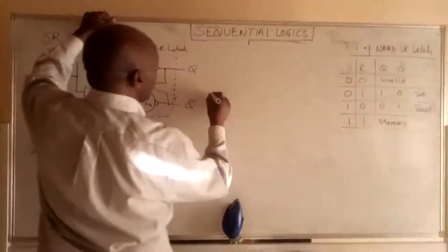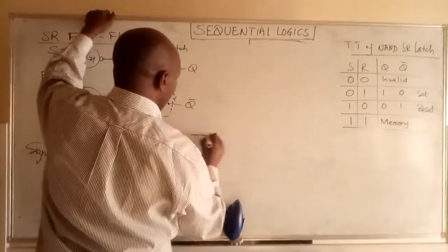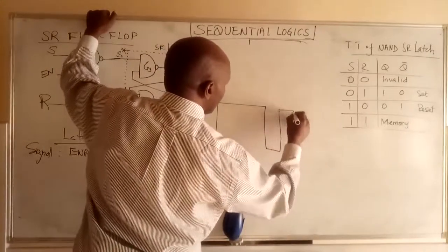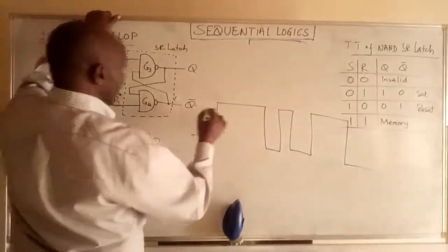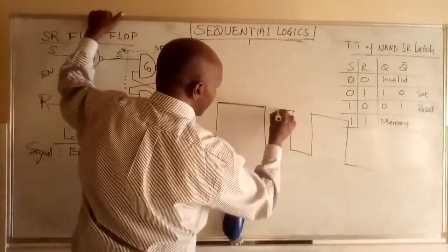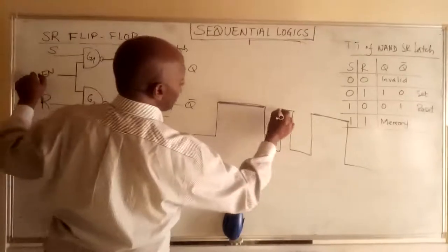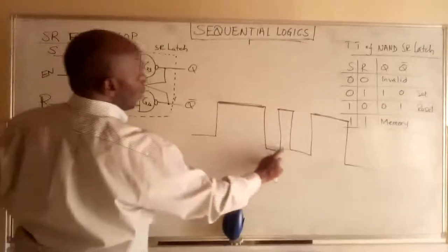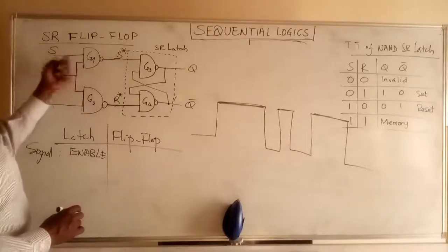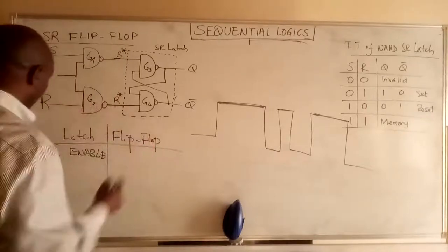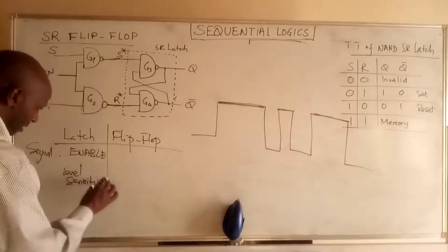Let me draw a random enable signal. When the enable is high, the circuit functions; when it is low, the circuit does not function. The circuit takes its inputs and functions when enabled. That is why it is called level sensitive — it is a level sensitive device.